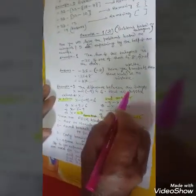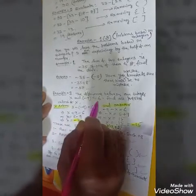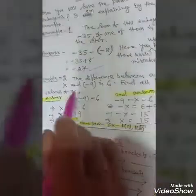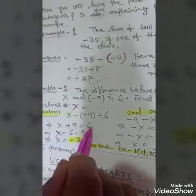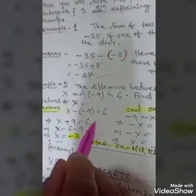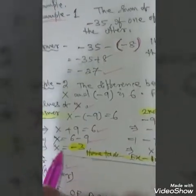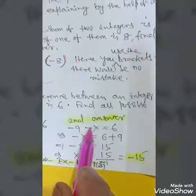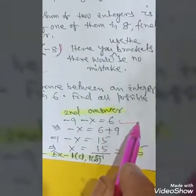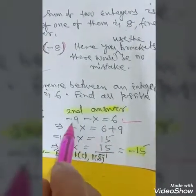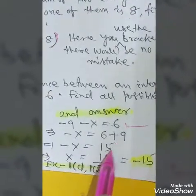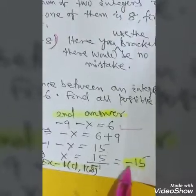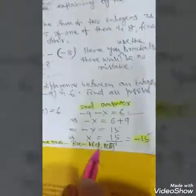Example 2: The difference between an integer x and minus 9 is 6. Find all possible values of x. First: x minus bracket minus 9 equals 6, so x plus 9 equals 6, giving x equals 6 minus 9 equals minus 3. Second: minus 9 minus x equals 6, so minus x equals 6 plus 9 equals 15, and x equals 15 divided by minus 1 equals minus 15.